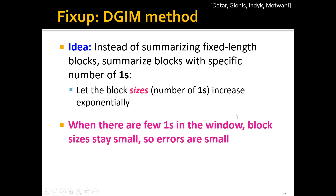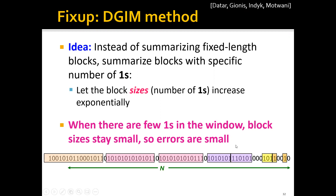When there are few ones in the window, the block sizes will stay small, so the errors are smaller. Concretely, we may split the buckets like this. For example, this bucket contains only one one, this bucket contains only two ones, and this bucket contains only four ones.